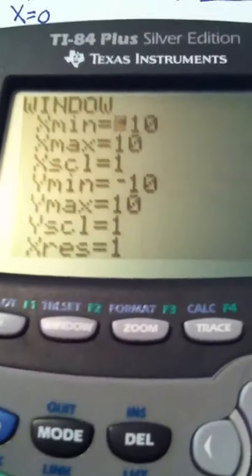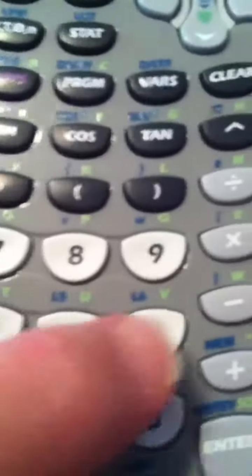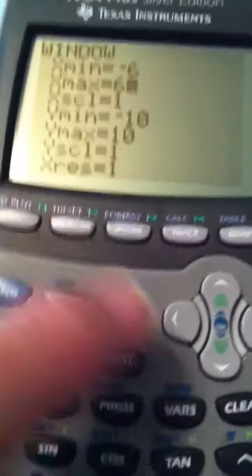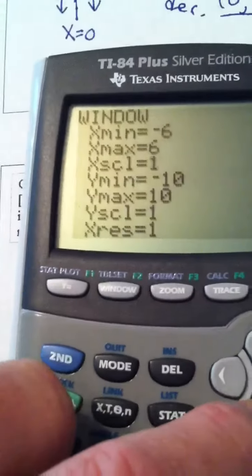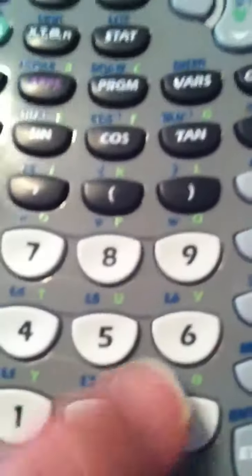So we're going to hit window. They want us to go from the opposite of 6 to 6. Don't change the scale, so just hit the down arrow, and then when we get to y min, we're going to change it to the opposite of 6.